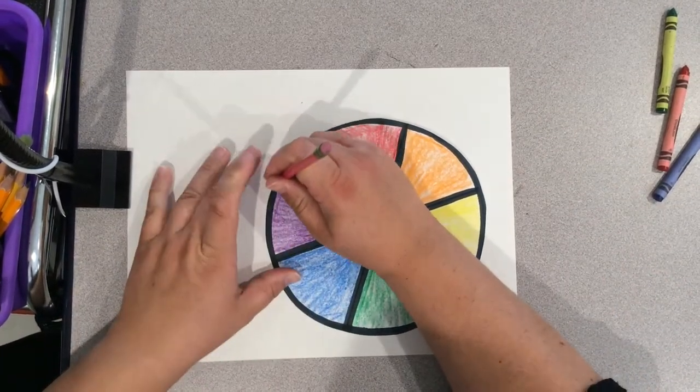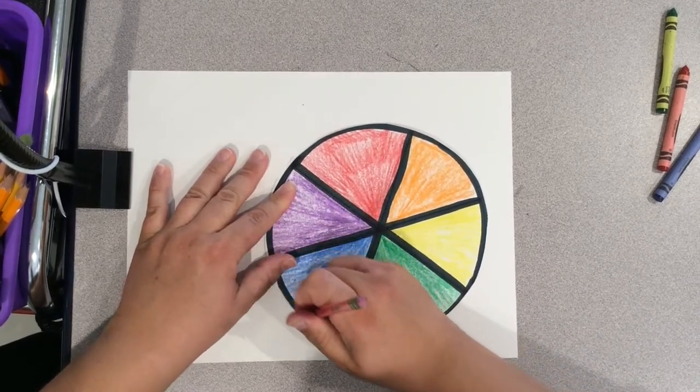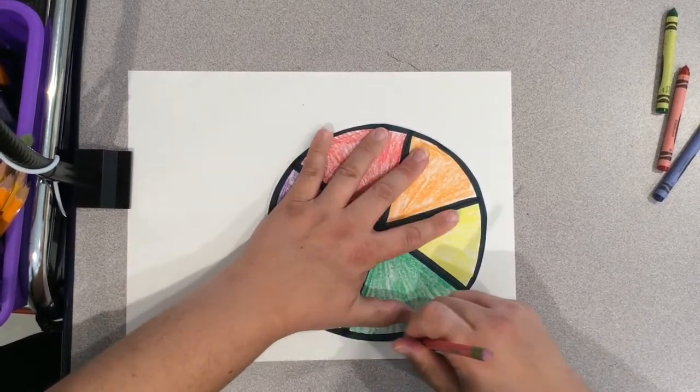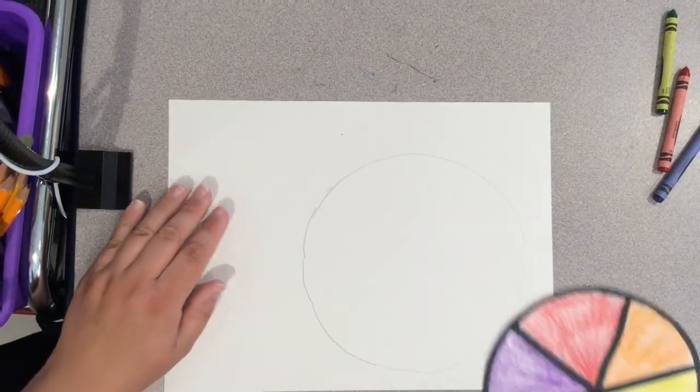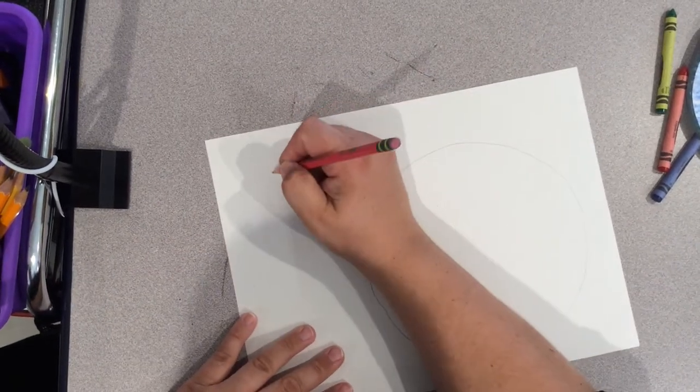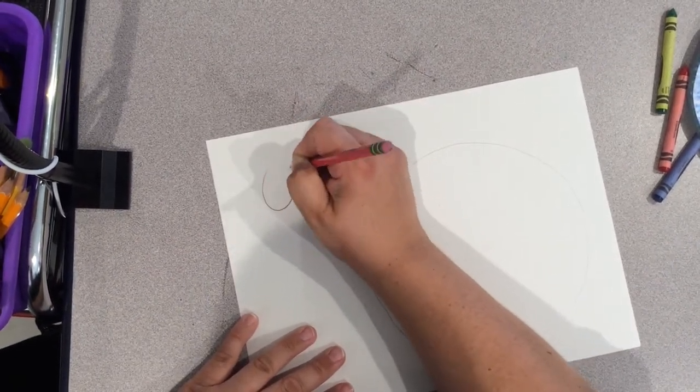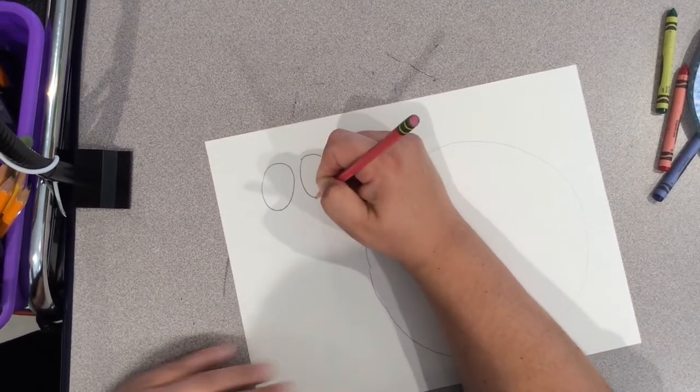For the snail, I'm going to trace my circle onto the paper so that I can tell where the color wheel needs to be before I start adding the rest of my details. So for the snail, I want to make sure that I have enough room over to the left to create the head of the snail and the little skin part that goes down below the snail to help them crawl on the floor.